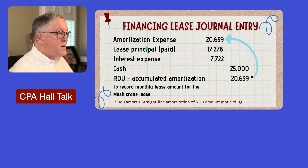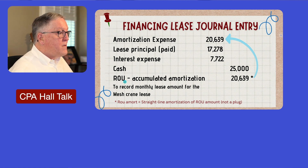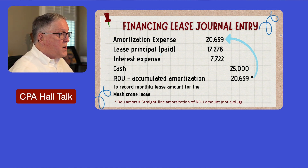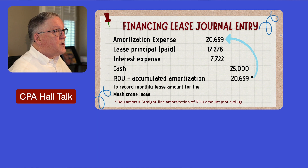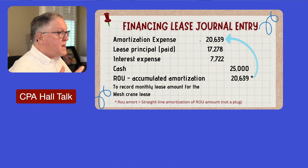This financing lease journal entry is much like the capital lease entry made under ASC 840. The only difference is that in the past we had depreciation expense; now we have amortization expense in relation to the right-of-use asset. The principal and interest amounts come from the amortization schedule. The amortization expense is simply the right-of-use asset divided by the lease term — it's a straight-line number that doesn't change each month, unlike the operating lease where that ROU amount changes every period.